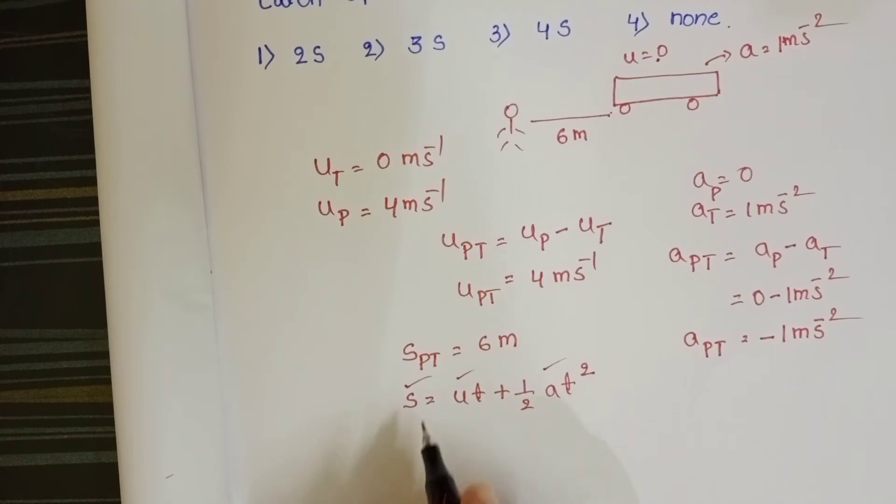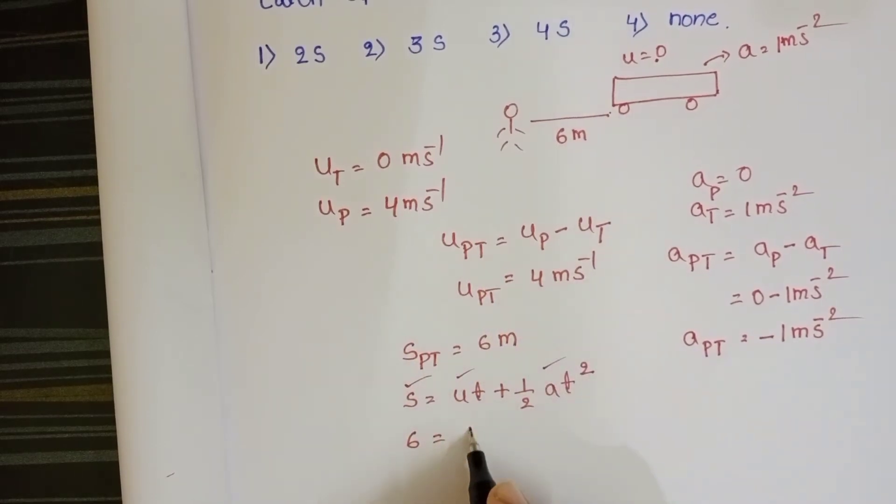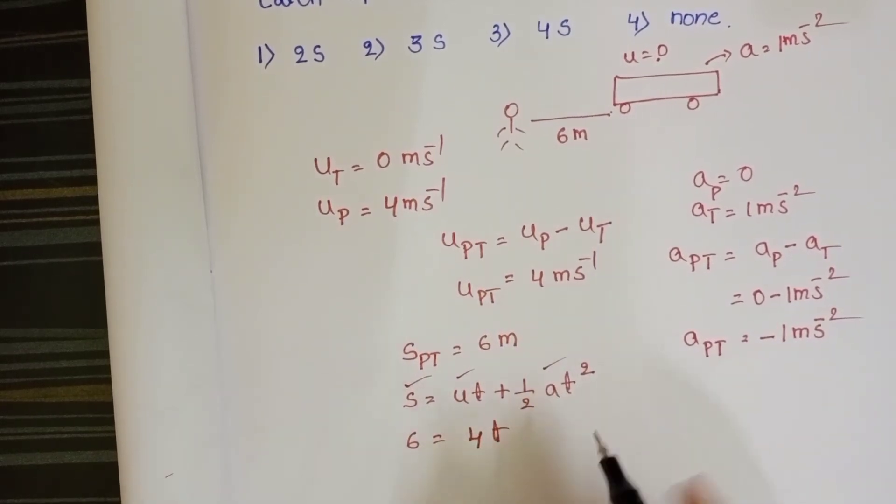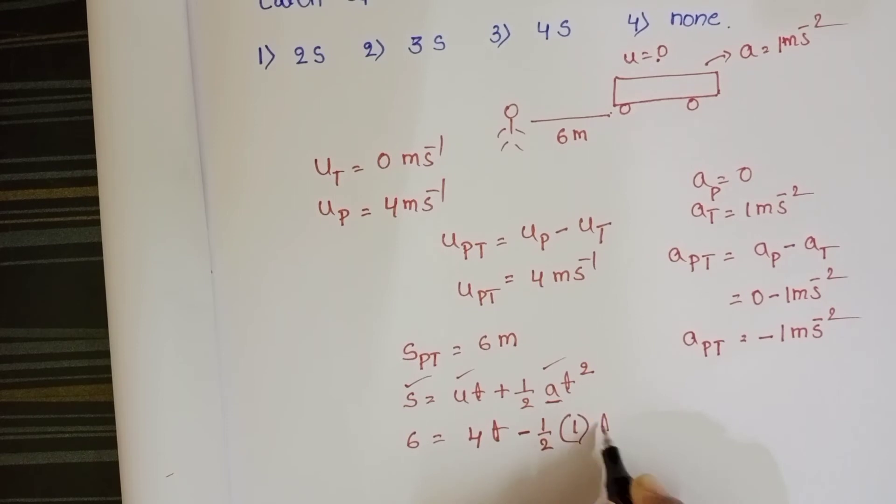In place of S, substitute 6 meters. And in place of velocity, relative velocity, 4 meter per second. And we don't know time. Relative acceleration is negative. So minus half into 1 t squared.